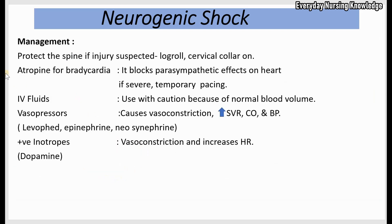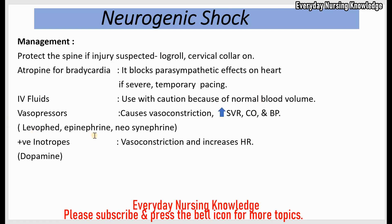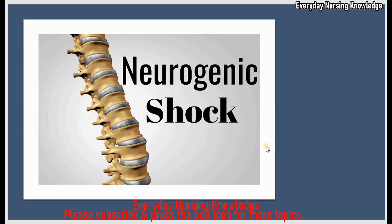Management of neurogenic shock includes: protecting the spine if spinal cord injury is suspected — log roll the patient when turning or transporting, keep the cervical collar on if cervical spine injury is suspected. Atropine is used for bradycardia as it blocks parasympathetic effects on the heart; if severe, temporary pacing may be necessary. IV fluids are used with caution to increase blood pressure, as neurogenic shock involves normal blood volume with vasodilation. Vasopressors such as epinephrine, norepinephrine, and dopamine are used to constrict blood vessels, increase systemic vascular resistance, cardiac output, and blood pressure.